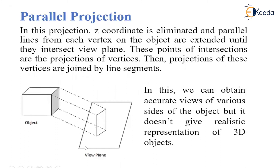This is the view plane on which we have to take the projection of the object. We eliminate the Z coordinate because we have to convert it into a 2D object, so the Z coordinate gets removed. From each vertex, we extend the lines until they intersect the view plane, then join these lines. We get that particular face of the object on the view plane — these projection points are the projections of the vertices.